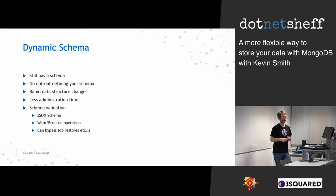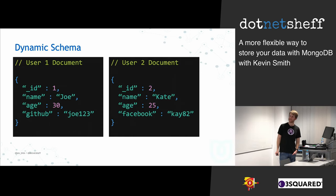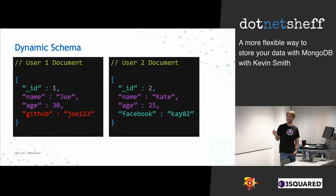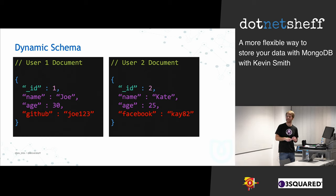Here's an example of two documents that are similar in structure and stored in the same collection. We've got user one and user two — they both have an ID, a name, and an age, so you can validate those. But they have different fields for authentication: one has a GitHub ID and the other has a Facebook ID. That's completely fine. You can put them both in the same collection, and how you interact with those two fields is up to your application. But you can still validate that both have a name and age and tell the database not to insert anything that doesn't.